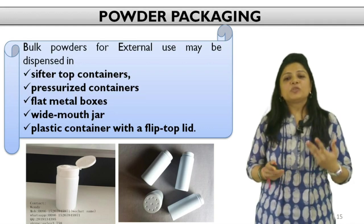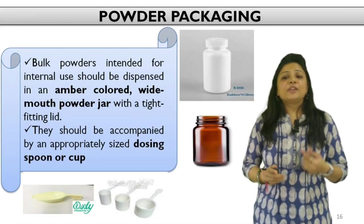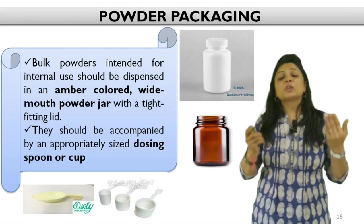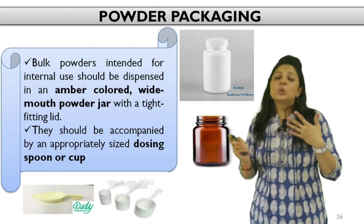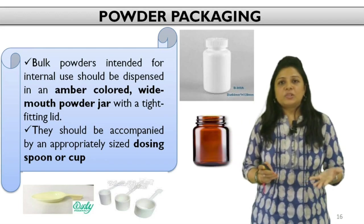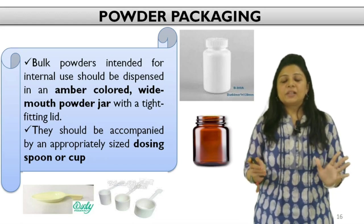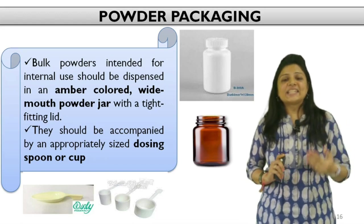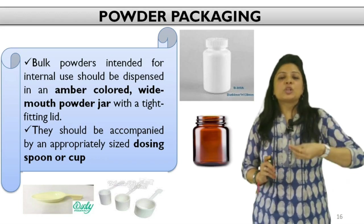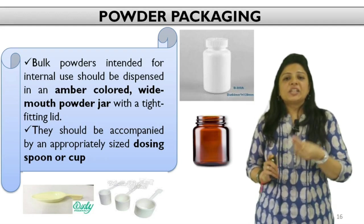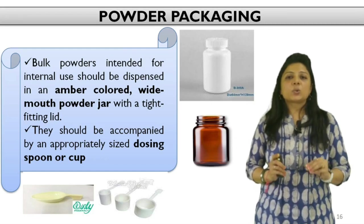You can also use plastic containers with slip-top lids as shown in the image. For bulk powders used internally, you can use wide-mouth glass powder jars, simple transparent powder jars for stable powders, and amber-colored jars for light-sensitive powders. A measuring device like a spoon or spatula can be supplied as tertiary packaging with which the powder can be measured to take the dose uniformly.